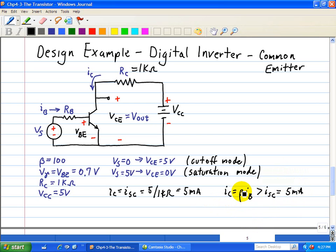Therefore we calculate IB, which we know is VS minus Vbe divided by RB. Therefore beta IB is equal to beta, the voltage across RB, which is VS minus Vbe divided by RB. And when we substitute these values, 100 times 5 minus 0.7 divided by RB must be greater than 5 milliamps.